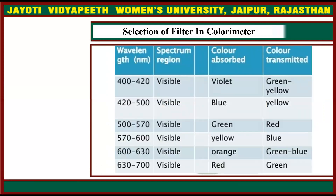These are the wavelength ranges, spectrum region, color absorbed by the filter, and color transmitted. For 400 to 420 nm, it is in the visible range: violet color is absorbed and green-yellow is transmitted. For 420 to 500 nm, also visible: blue is absorbed and yellow is transmitted. For 500 to 570 nm, spectrum is visible: green color is absorbed and red is transmitted.